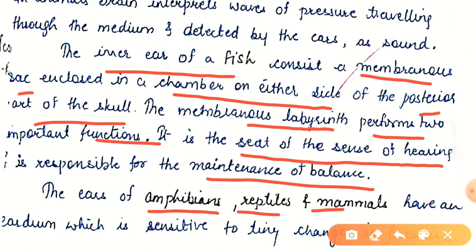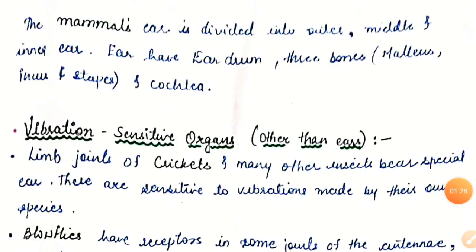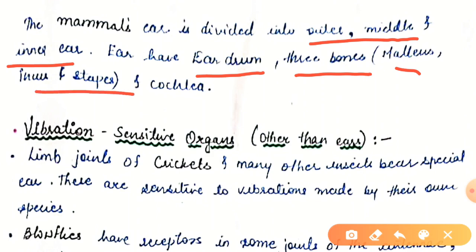In amphibians, reptiles, and mammals, these organisms have an eardrum which is sensitive to tiny changes in pressure. The mammal's ear is divided into three parts: outer, middle, and inner ear. The ear has an eardrum, three bones — malleus, incus, and stapes — and a cochlea. This is the structure of a mammal's ear.